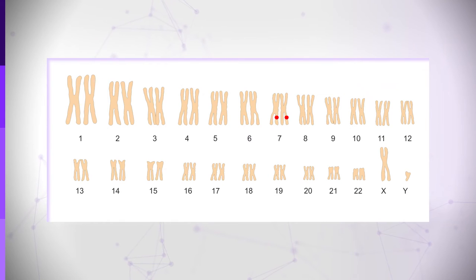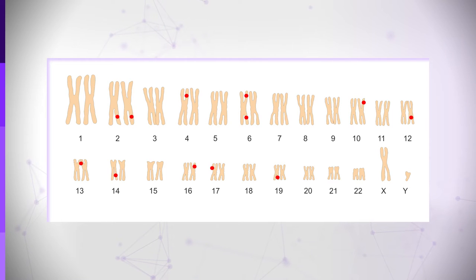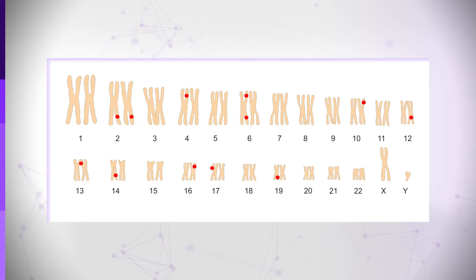In contrast to monogenic disease, where a single mutation in one or both copies of a gene leads to a disease phenotype, in complex trait disease variants in many loci around the genome contribute to the probability of a disease phenotype. For some diseases we now know over 100 loci that contribute, and it is probable there is a long tail of loci where variants contribute more weakly.